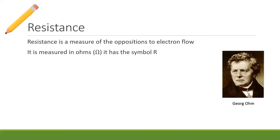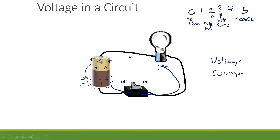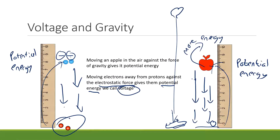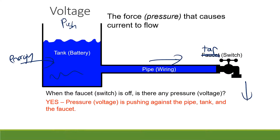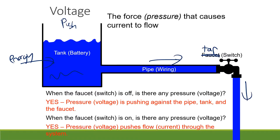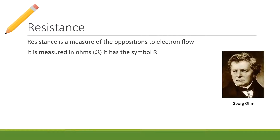To clarify: electrons are like an apple — if you pick an apple up you give it energy, drop it and it releases the energy. You move an electron away from a positive, you give it energy; let it go and it'll move to the positive and release energy. The whole idea of a circuit is to use that energy. The voltage is how far away we move those electrons — how much energy they have before moving towards the positive.